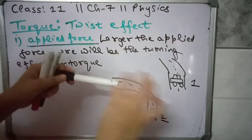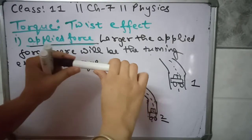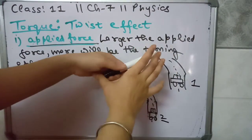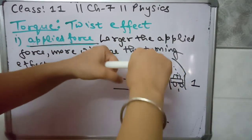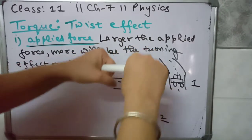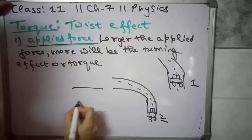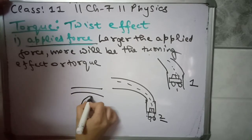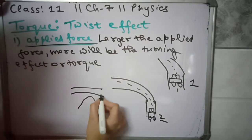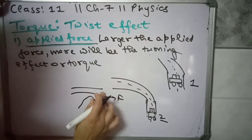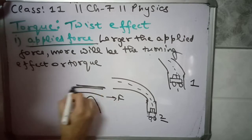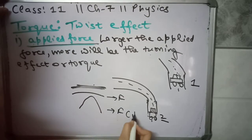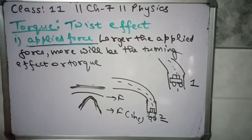If this is a metal rod, we twist it. If we apply a small force, its shape changes very little — only a slight bend from its original shape. But if you add more force, the metal rod bends more. So the applied force directly affects the turning effect.